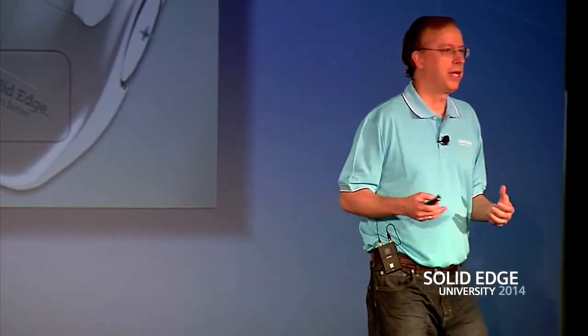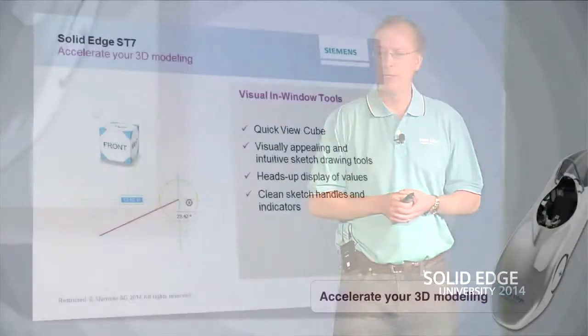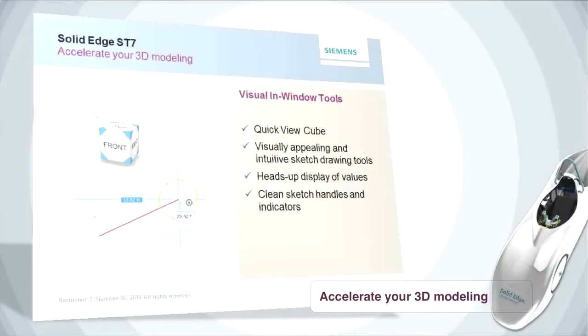QuickViewCube is really nice, particularly when working on someone else's model — you no longer have to guess which is the front view versus the top view. Just use it to always go exactly to what you want to see. The heads-up display of values, reworked sketch handles, and even the reworked cursor that avoids covering up what you're trying to locate — a lot of attention to detail in ST7.